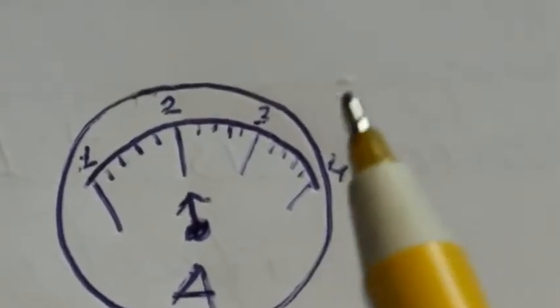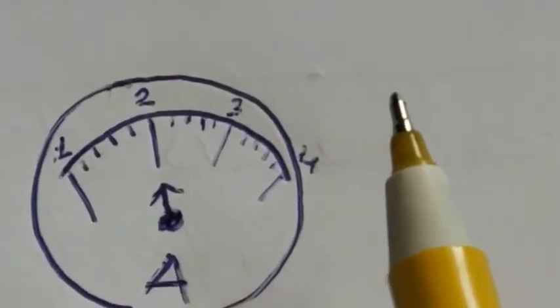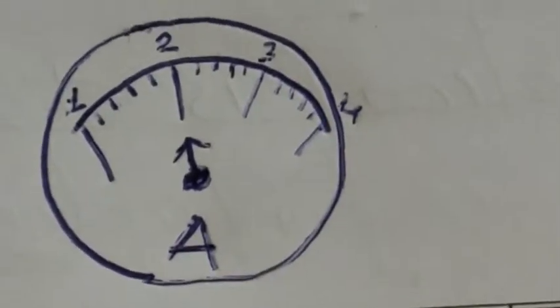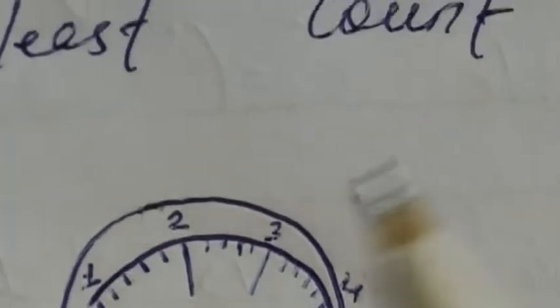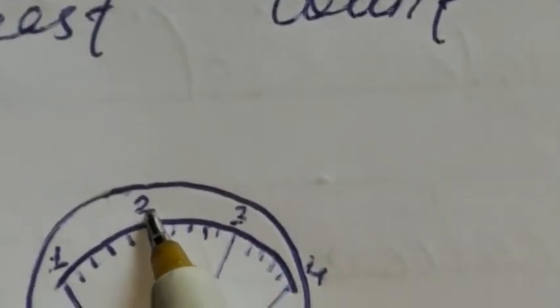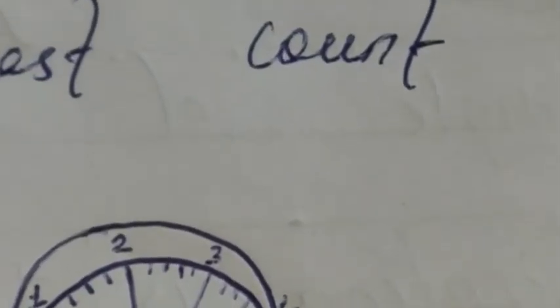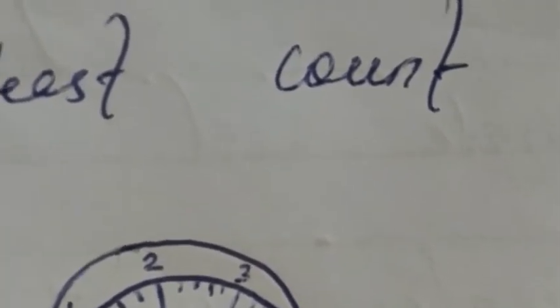An ammeter is given and you have to find out the least count of this ammeter. The scale markings are 1, 2, 3, and 4 — these values are in ampere. The ammeter is the instrument used to find out the value of electric current.